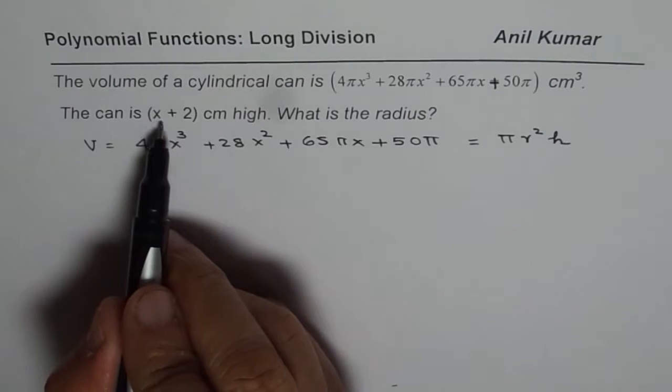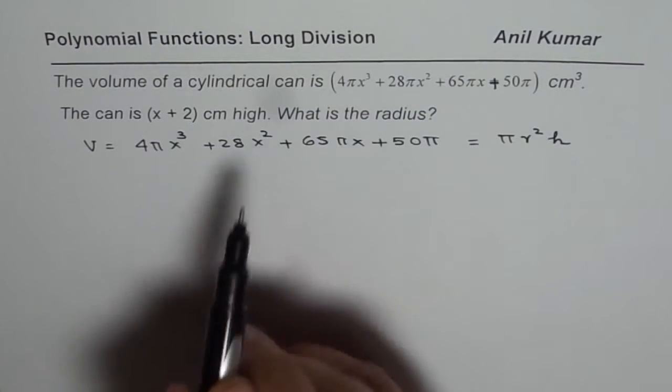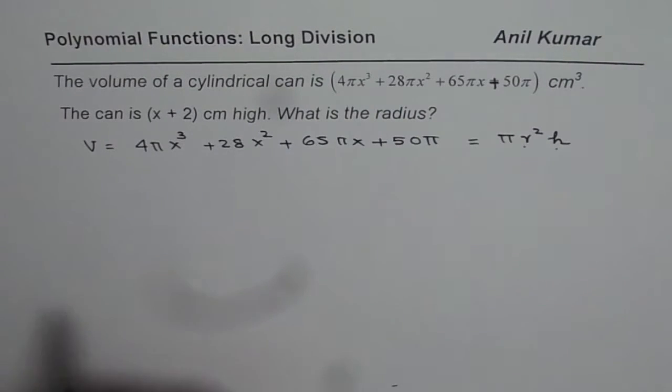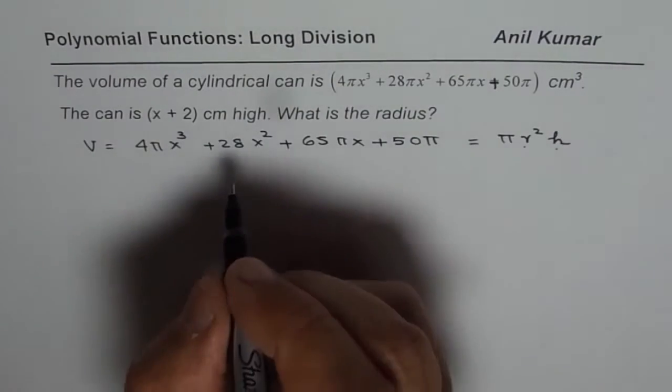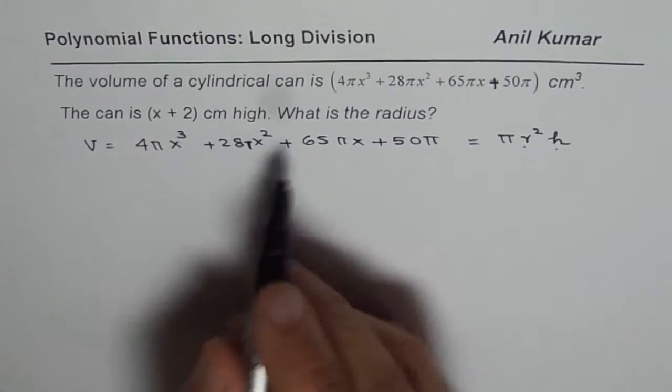We are also given height as x + 2. Now we need to find radius. So height is given to us, we need to find radius. Now as you can see, we can actually simplify, cancel π. I forgot to write π here. So π is a common factor.